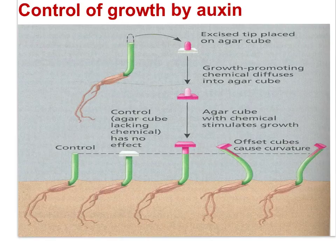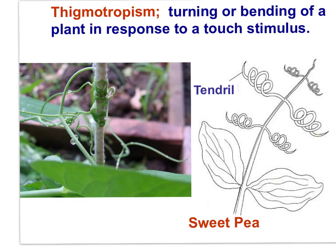Auxin has since been extracted and identified as the hormone causing phototropism. Thigmotropism is a tropism where the plant turns or bends in response to a touch stimulus. Can you guess which side of the stem elongates upon contact with the surface? Take a guess about where auxin concentrations might be highest.